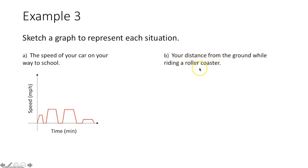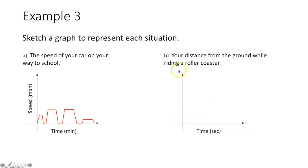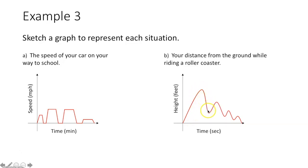For the roller coaster: the independent variable along the x-axis is time in seconds, because a roller coaster ride is usually around a minute. The dependent variable along the y-axis is distance from the ground, height in feet. You start at ground level, the track takes you up slowly, then at the top you drop rapidly. At the bottom it brings you back up, then back down, swinging left and right, until you return to ground level.